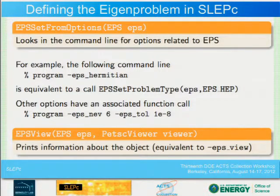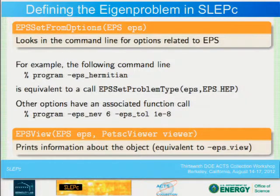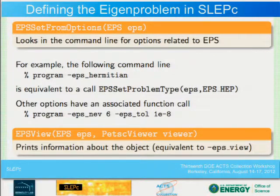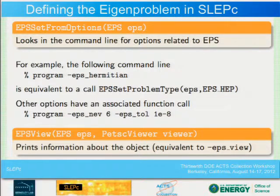At runtime, you can use flags such as EPS type to change the solver, specify that you're interested in six eigenvalues, or set the tolerance to 1e-8. These flags are passed on the command line to your program.